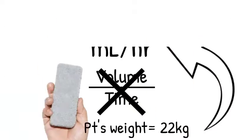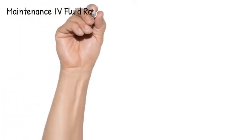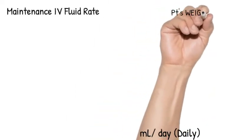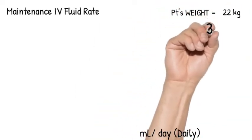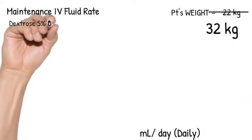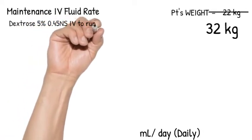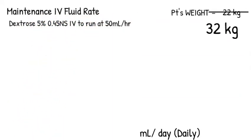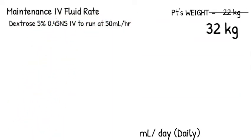All right, so how do we calculate for maintenance IV fluid rate? I will teach you two methods. The first is through calculating for the daily fluid maintenance. Let's change his weight for this exercise and he's now 32 kilos. Let's say the doctor ordered dextrose five and a half normal saline IV to run continuously at 50 mls per hour.